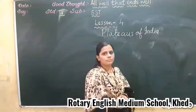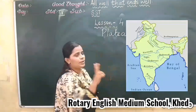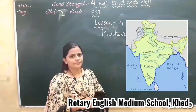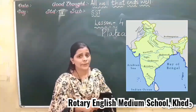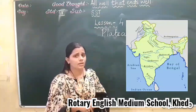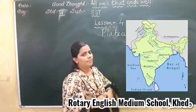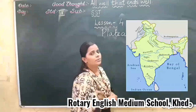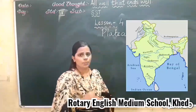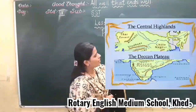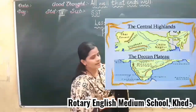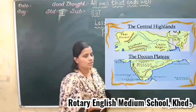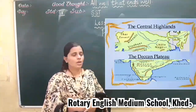The River Narmada divides the plateau into two parts. Which river divides the plateau into two parts? River Narmada divides it into two parts. You can see the first part — that is the Central Highlands, and the second is the Deccan Plateau.